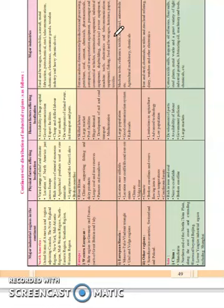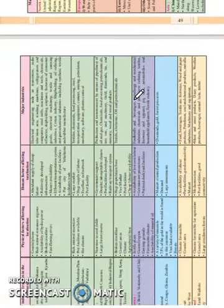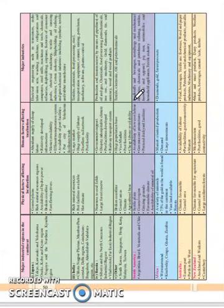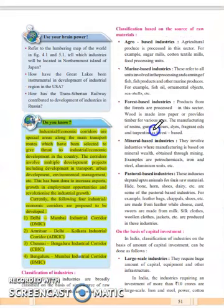You should know which are the major industrial regions in each continent, and in which countries what type of industries are present. This table you need to learn by heart — for example, which type of industries are seen in New York or in China. These are the questions you need to know, and with the help of this you can answer the map questions. Major industrialization regions include continents and countries like Japan, India, and Russia. Read this table properly and clear your concepts regarding the industries and sectors in each country.